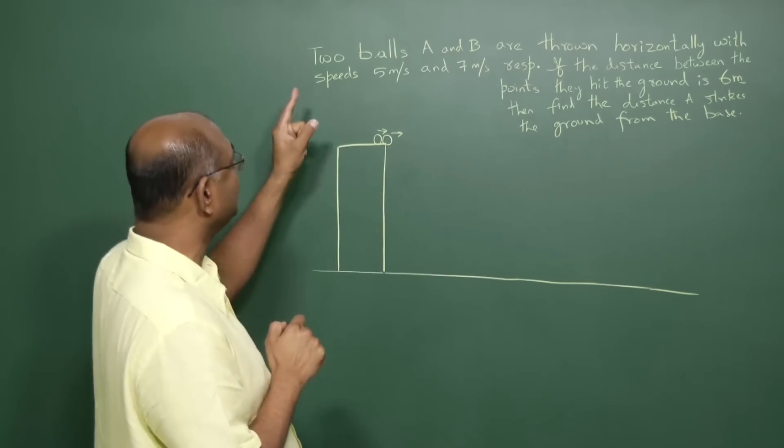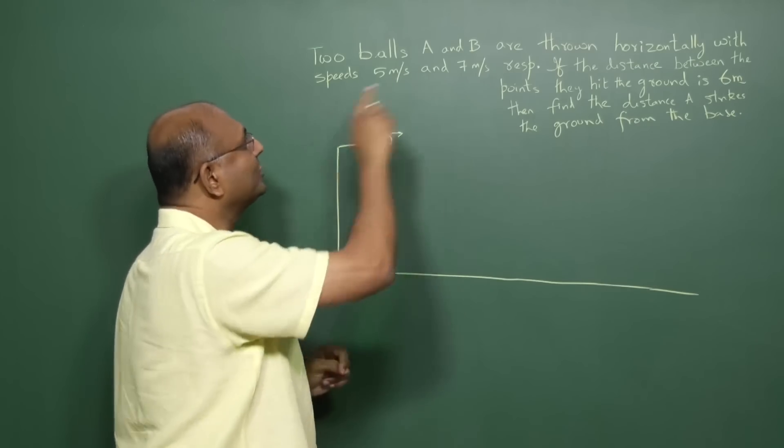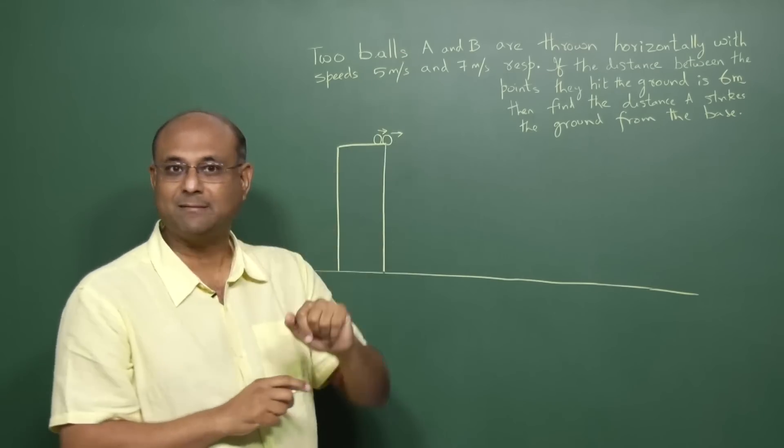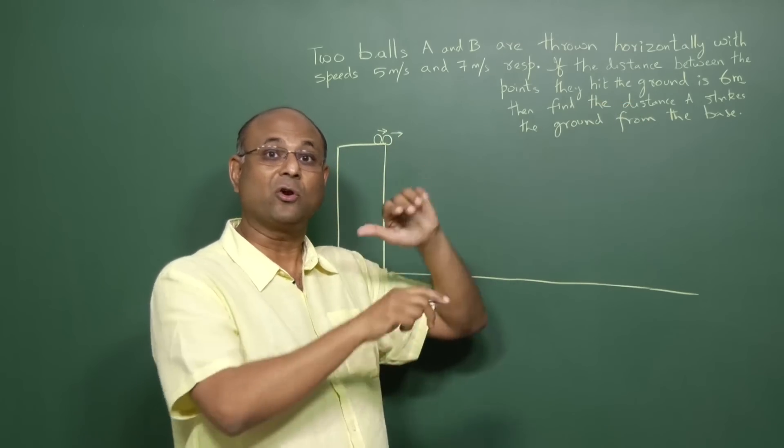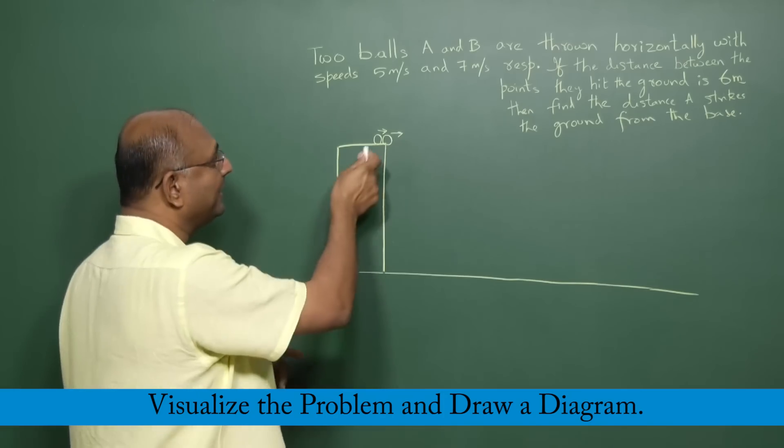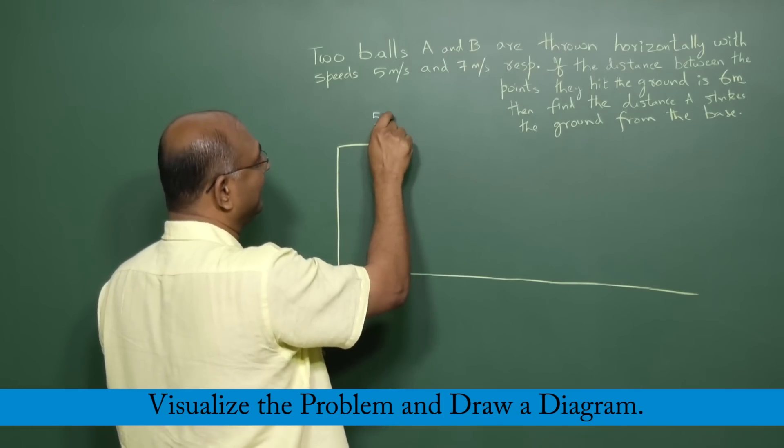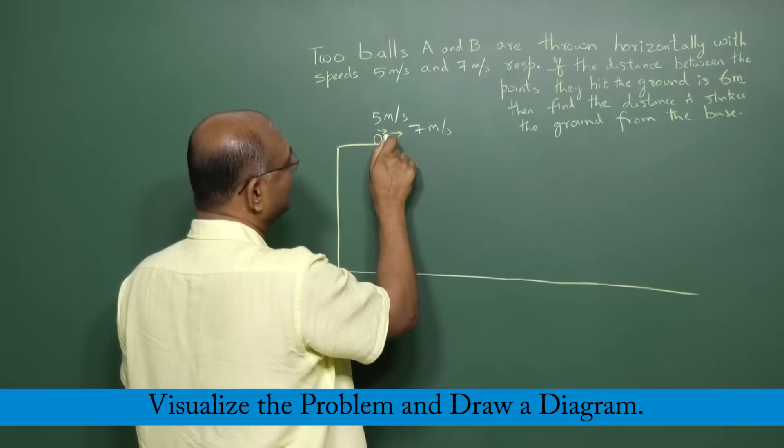Let us look at this question. You have two balls A and B that are thrown horizontally with speeds 5 meters per second and 7 meters per second. Now the first thing you should do when you read the question is to draw a diagram. So they are thrown with 5 meters per second, 7 meters per second in the same direction. Let's say from here, 5 meters per second, 7 meters per second. So this fellow, this is A, that is B.